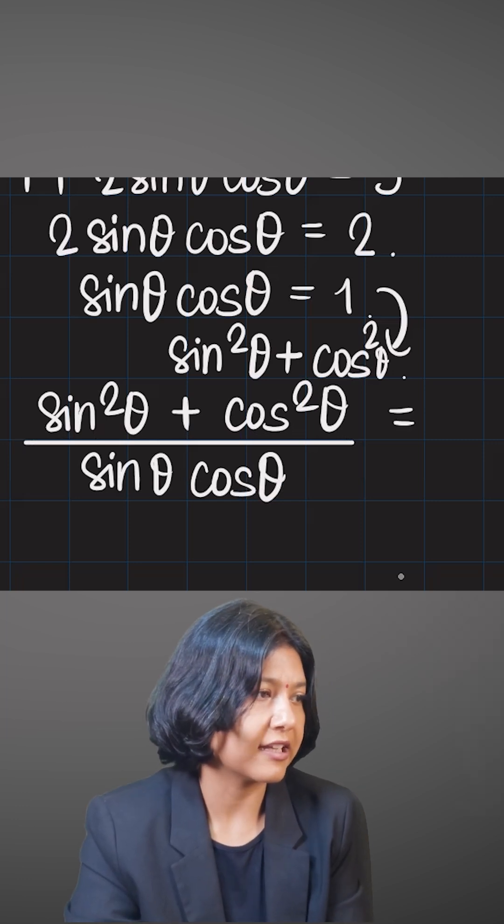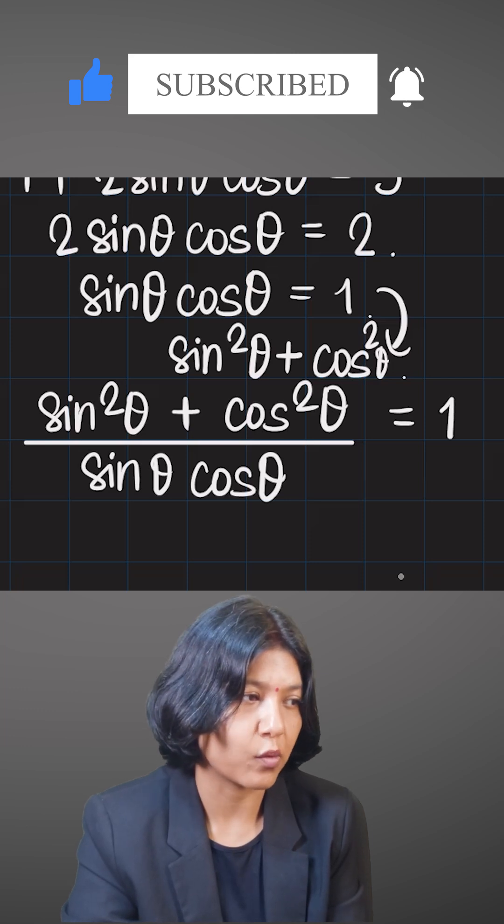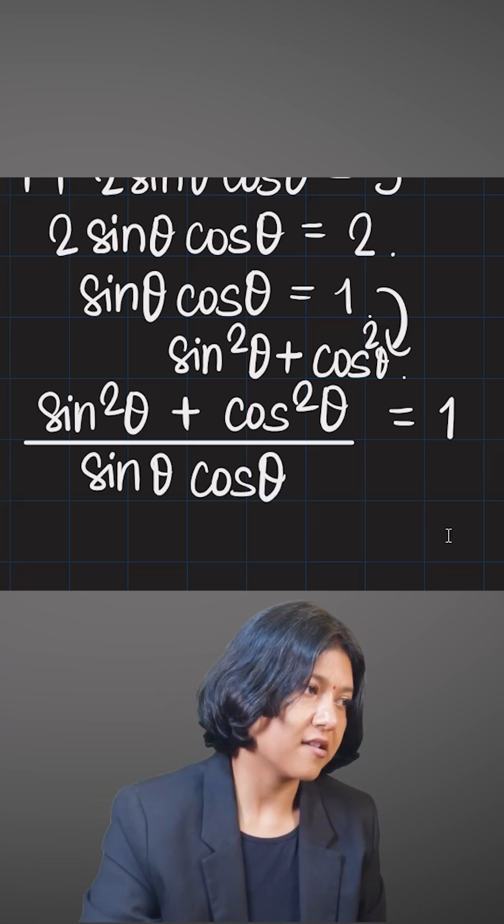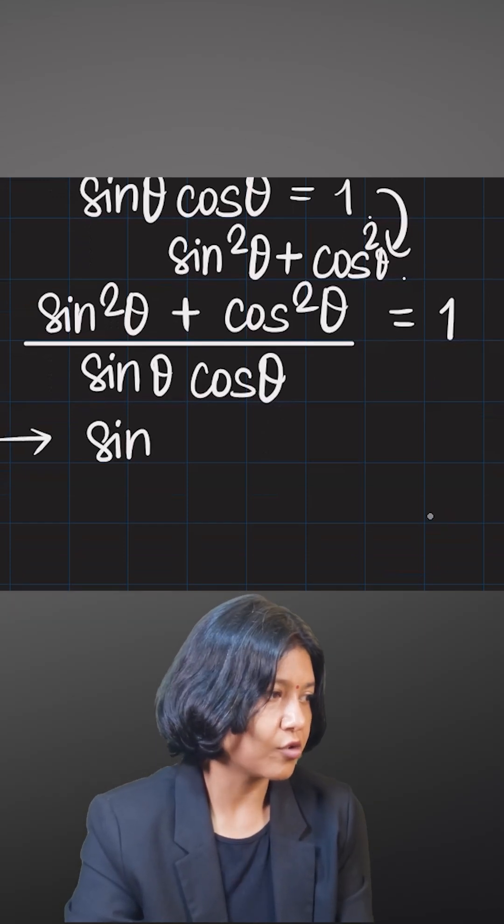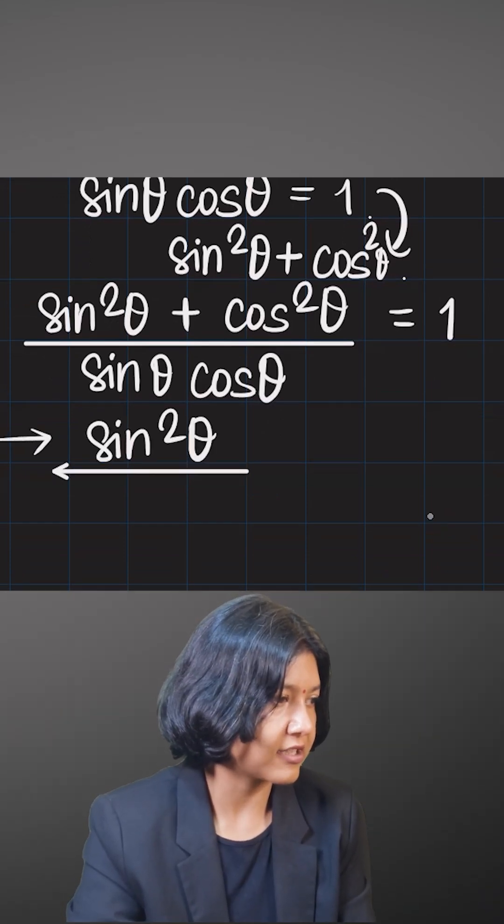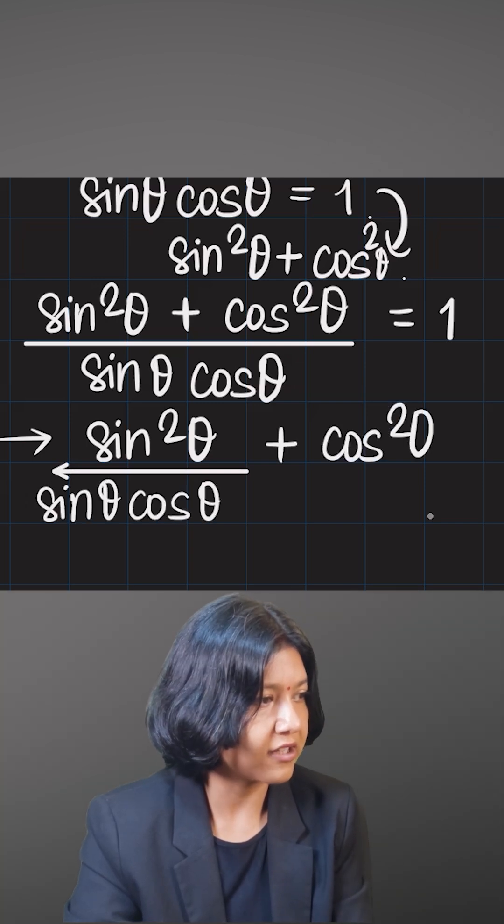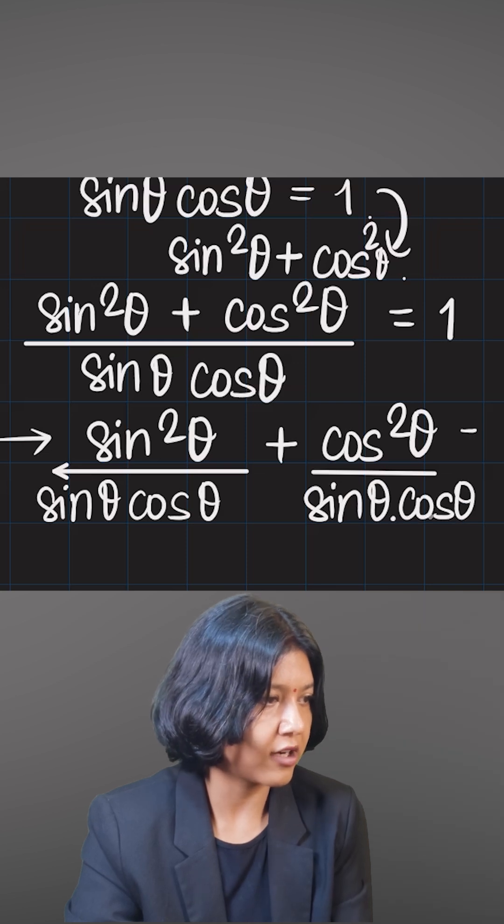If I divide both sides by sine theta cos theta, then what do I have? I'll get sine theta cos theta divided by itself, which is 1. And on this side I'm writing sine square theta plus cos square theta over the same, because from here now I can split up the numerator into two parts like this: sine square theta divided by sine theta cos theta plus cos square theta divided by sine theta cos theta.